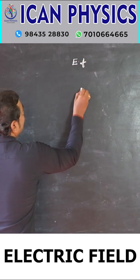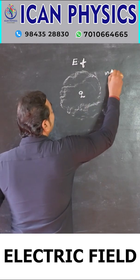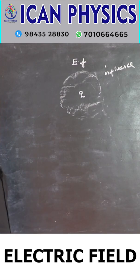So the space around the charge where its influence is felt is called electric field.